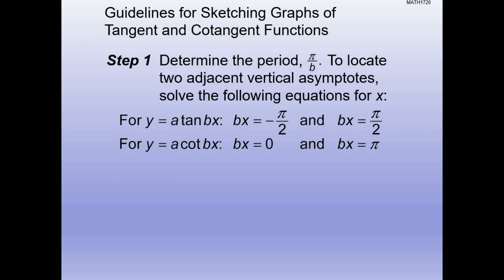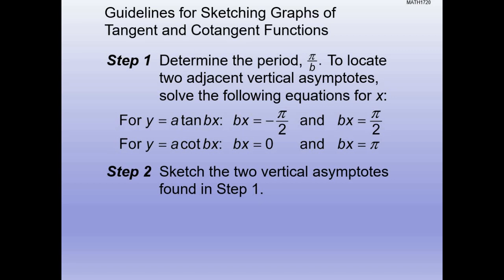How we determine the period: with sine and cosine the period was 2*pi/b because they repeated every 2 pi. Tangent and cotangent repeat every pi, so to find the period for tangent or cotangent, it's pi over b — not 2 pi over b, it's pi over b. That's how we'll calculate the period when we do examples.